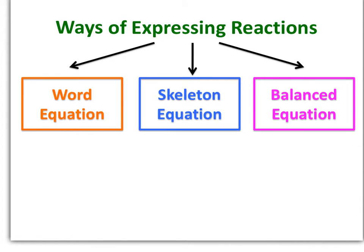There are three general classifications of equations in chemistry. The first and simplest is the word equation, which looks most like a sentence. Next is the skeleton equation, where you use chemical formulas instead of words but the equation is not balanced. The final one is the balanced chemical equation, which obeys the law of conservation of matter.